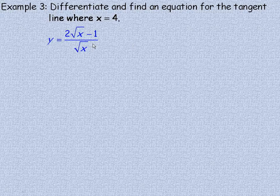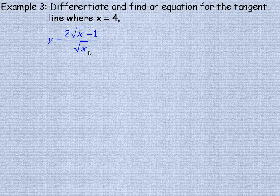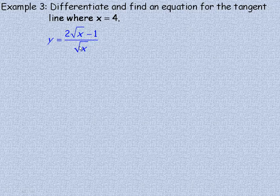In this last example, we're going to differentiate this function and then find the equation for the tangent line where x is 4. Now it doesn't matter whether I'm going to use the quotient rule or the product rule. If I see root of x, I'll write it as x to the power of a half before I differentiate.